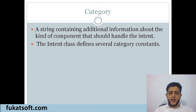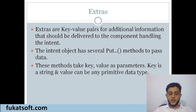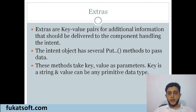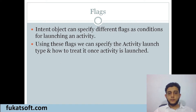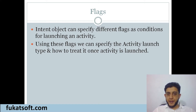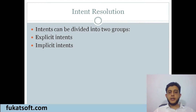اس کے بعد آتا ہے Category — یہ different types کی ہوتی ہے۔ اس کے بعد Extras — یہ intent کا ایک بڑا important حصہ ہے جو basically اس لیے use ہوتا ہے کہ اگر ہم نے ایک previous activity سے کچھ data next activity میں send کرنا ہو تو extras کے ذریعے بھیجتے ہیں۔ Flags کا مقصد یہ ہوتا ہے کہ next activity launch کرنے سے پہلے کچھ conditions check کرے — جیسے کہ وہ activity پہلے سے launch ہے یا نہیں، یا اسے clear کرنا ہے یا parallel open کرنی ہے۔